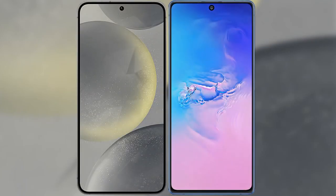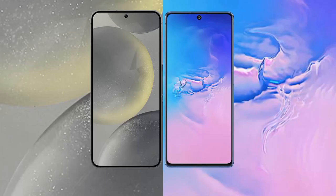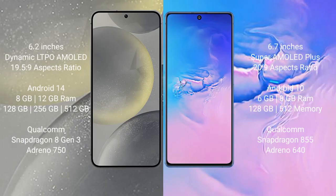I will compare the new Samsung Galaxy S24 with Samsung Galaxy S10 Lite. Samsung Galaxy S24 comes with a 6.2 inch Dynamic LTPO AMOLED display and Samsung Galaxy S10 Lite has a 6.7 inch Super AMOLED Plus display.